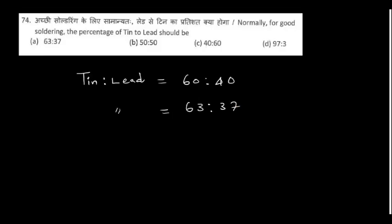For good soldering, the percentage of tin to lead should generally be 60:40. In space-grade applications, they use 63:37. So the appropriate option is the right answer.